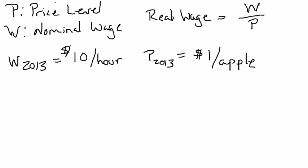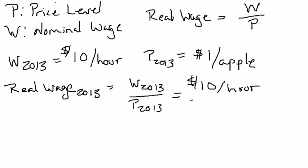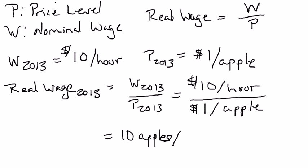The real wage is how much stuff you can buy. Nominal wages are in dollars; real wages are in stuff — how much stuff can you buy? So let's calculate the real wage in 2013. That should be the nominal wage in 2013 divided by the price level in 2013. The nominal wage is $10 an hour, and the price level is $1 per apple. The dollar signs actually cancel, and when you do all the division, you end up with 10 apples per hour as your real wage.